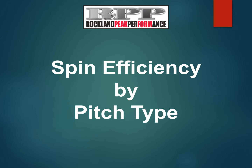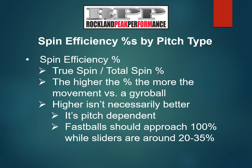We get asked about spin efficiency by pitch type quite a bit, so let's quickly review what spin efficiency means before we get into our suggested ranges. Spin efficiency is true spin divided by total spin, expressed as a percentage. It's a measurement of how much of the different types of spin are actually contributing to movement. The higher the percentage, the bigger the movement. 100% spin efficiency means there's no gyro spin, and 0% spin efficiency means it's 100% gyro spin. Spin efficiency is kind of a misnomer because people associate higher efficiency with something better, but that's not always true — it's really pitch dependent.